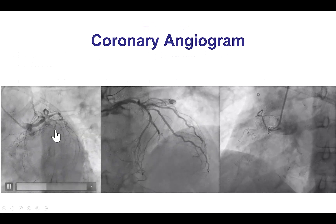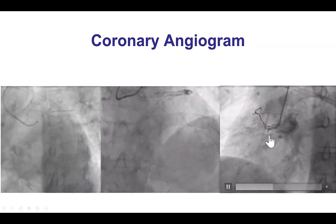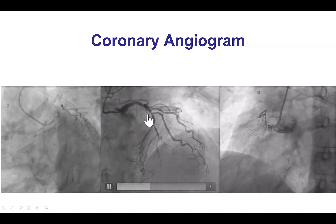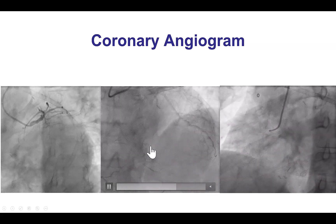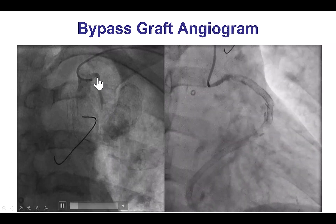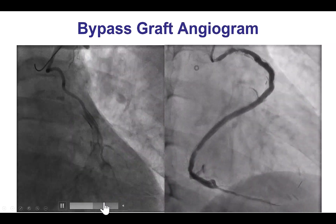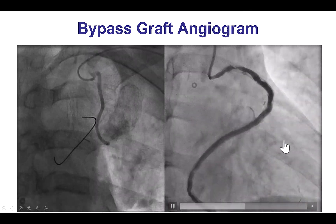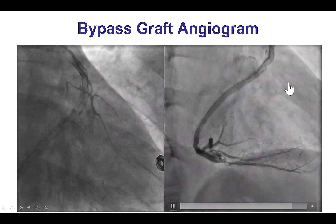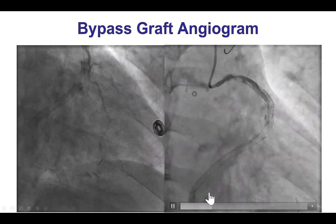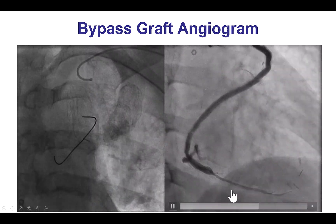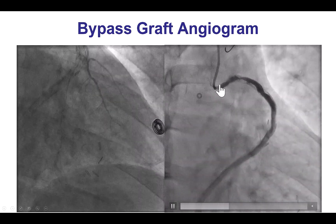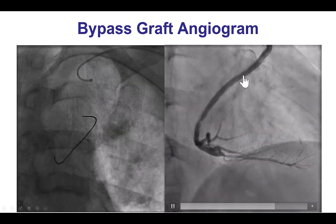This is his angiogram showing an ostial circumflex CTO and ostial RCA CTO. There is disease in the LAD with competitive flow from the LIMA, and here is the patent LIMA graft, as well as the sequential saphenous vein graft. The first obtuse marginal is a very small, diffusely diseased vessel, but the PDA and the posterolateral are very large. This vein graft has a significant in-stent restenotic lesion in the proximal segment.